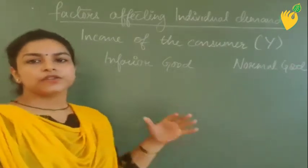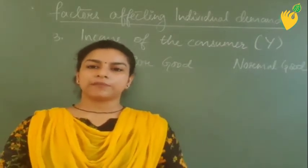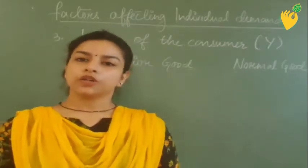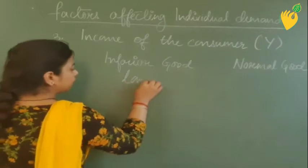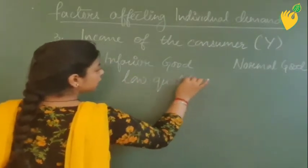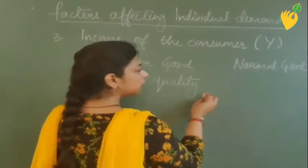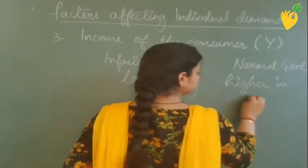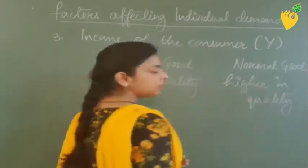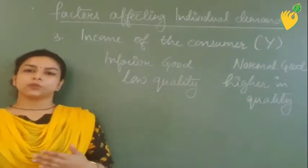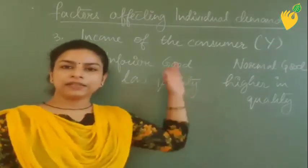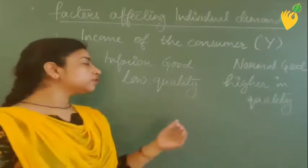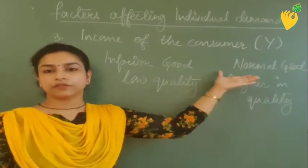What are inferior goods? This concept changes from person to person. For one person a good can be an inferior good, but for another person that same good may be a normal good. Inferior goods are those which are low in quality, whereas a normal good is a commodity that is comparatively higher in quality. You should consider these two types of goods while explaining this factor.